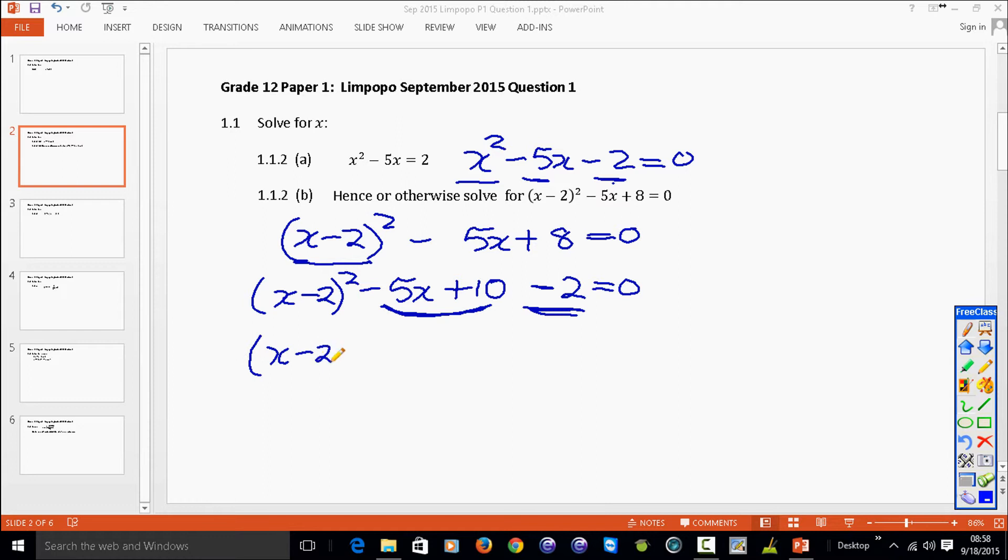x minus 2 all squared. Take out negative 5 as a common factor. You get x again minus 2, because minus times the minus gives us plus 10. Oh, this starts looking good. Can you see that you have exactly the same pattern as in the previous equation? Of a square minus 5 times the variable minus 2.